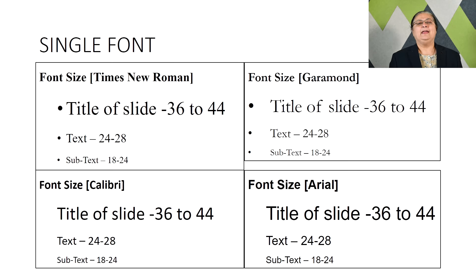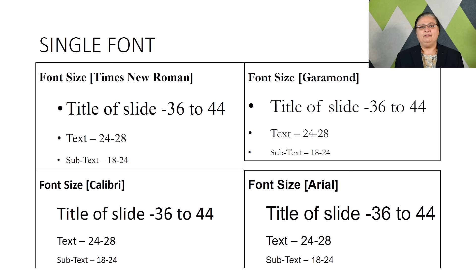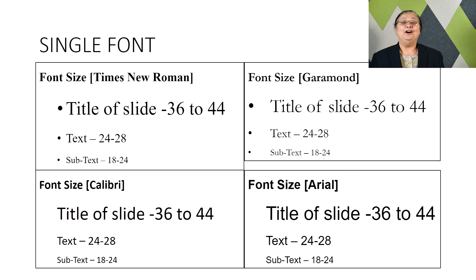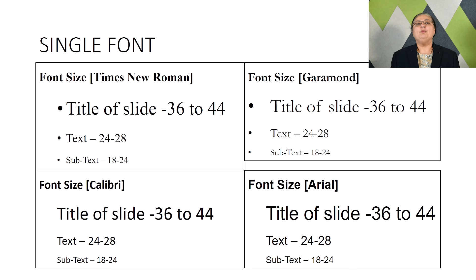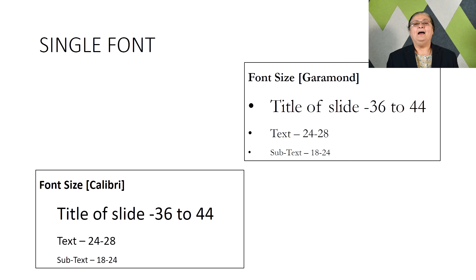Try and stay to a single font and use the same font family for contrast. Now let's look at the font size. Different fonts give you visually a different size when you change it. Ideally, title of the slide 36 to 44, text 24 to 48, and subtext 18 to 24 should be what we all stay with. For this university's recordings, it would be preferable to stay with Calibri or Garamond.